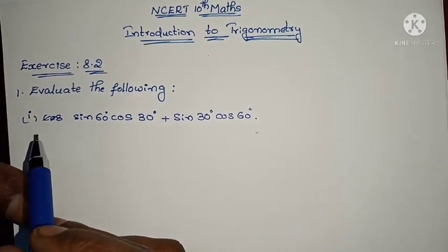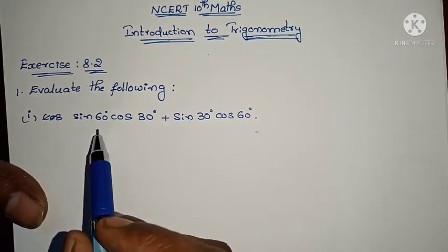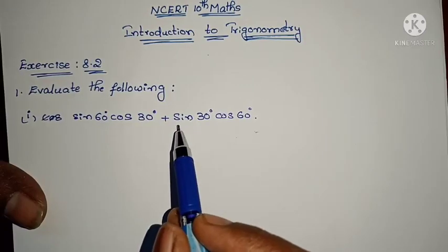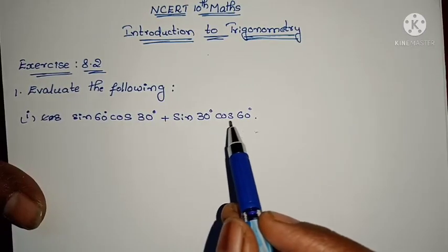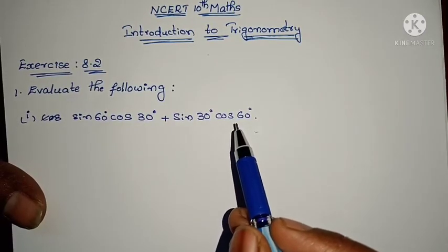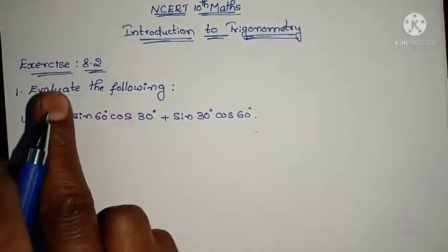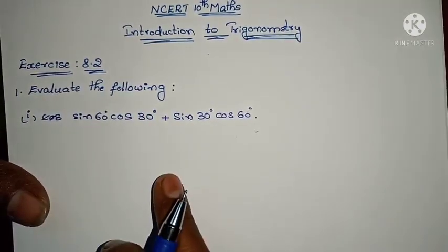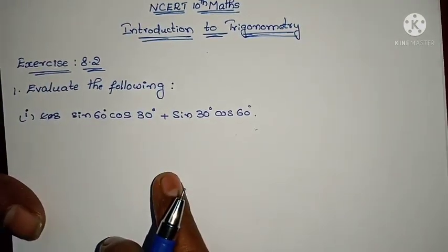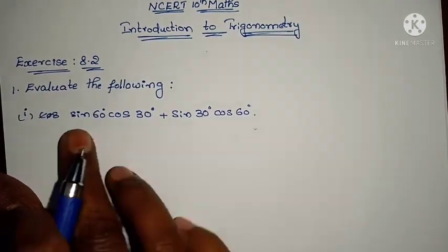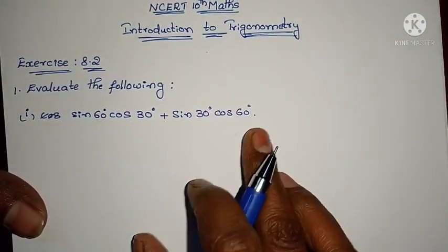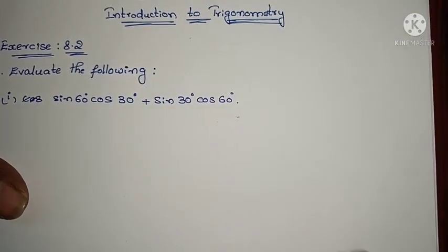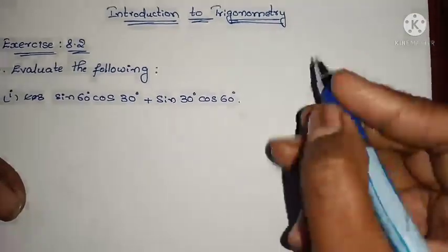The first question: Sin 60 degrees into cos 30 degrees plus sin 30 degrees into cos 60 degrees. We have to find the value for this question. Before that, let us tabulate the trigonometric ratios.